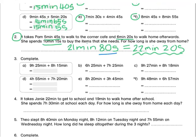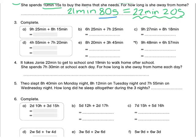Let's continue on to question 3. For A, we are adding 9 hours and 25 minutes and 8 hours and 15 minutes. When we add our minutes, 25 minutes plus 15 minutes will give us a total of 40 minutes. So our final answer is 17 hours and 40 minutes.